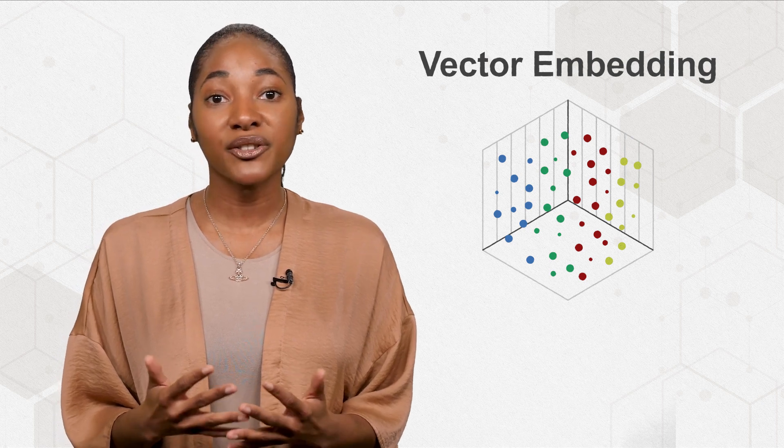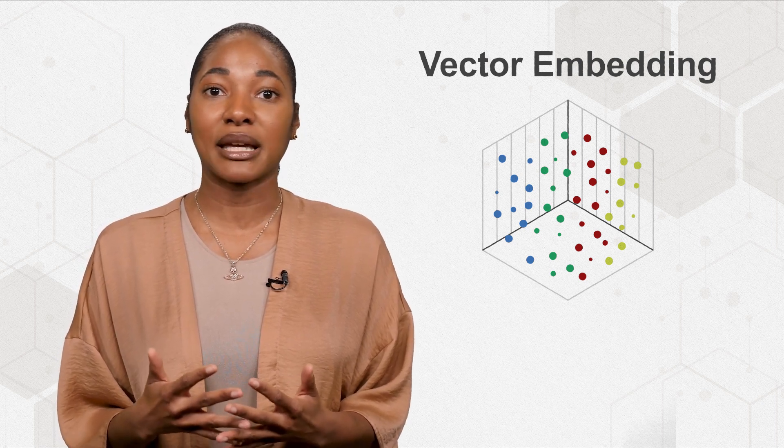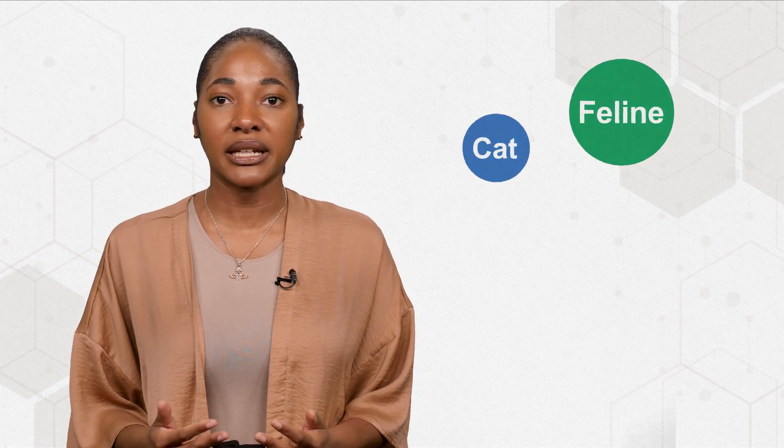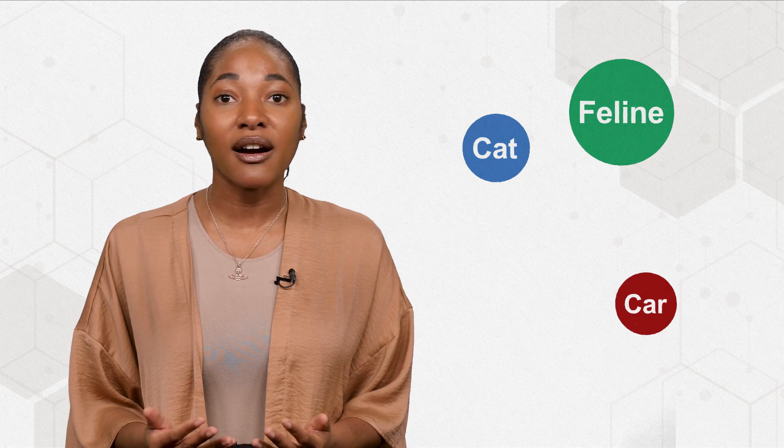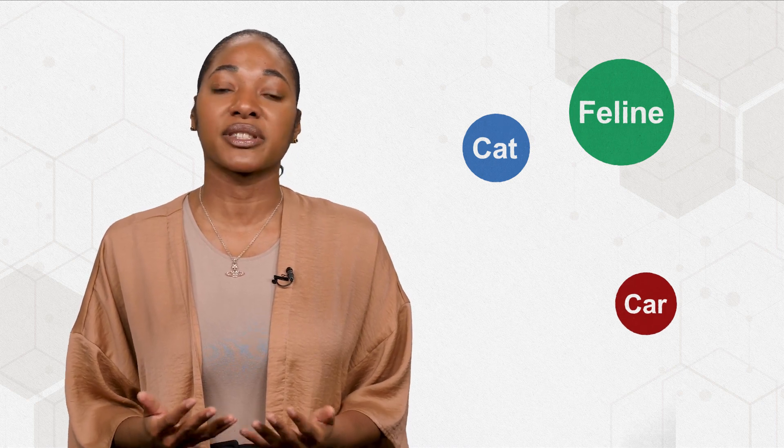The more similar vectors are, the closer together they are in the embedding. For instance, an embedding could represent that cat and feline are more related, therefore closer together in the vector space than cat and car, even though their spelling is more similar.